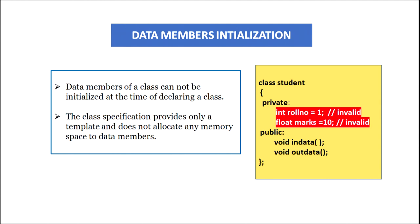For that reason, there are special member functions which have been declared inside the class to give initial values to the data members of the class. We can see in this example, if we assign the value 1 to roll number and 10 to marks, this will give an error because at present no memory space has been allocated to these data members. So this is wrong and should be avoided.